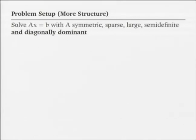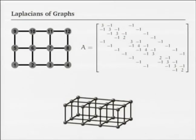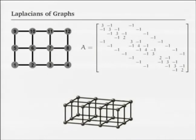One subclass of diagonally dominant matrices I'll focus on, because it's easier to explain, are Laplacians of graphs. Here we have two graphs. Here is a two-dimensional mesh — an unweighted mesh with numbered vertices. If there is an edge between vertex I and vertex J, then the matrix has a non-zero in position I, J. This graph is unweighted so the off-diagonals are all ones, and the diagonal has the weighted degree. You can generate a Laplacian for any graph: 2D mesh, 3D mesh, unstructured mesh, expanders.